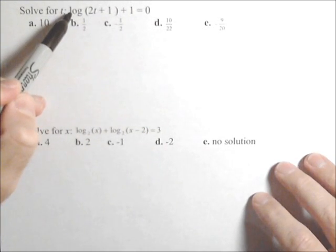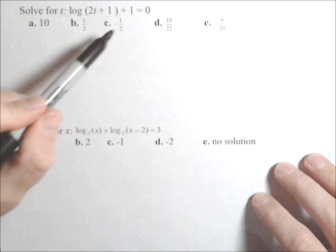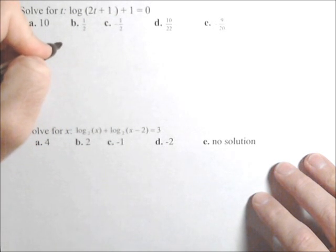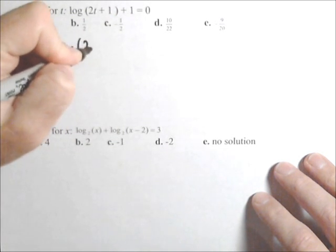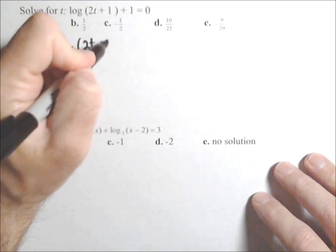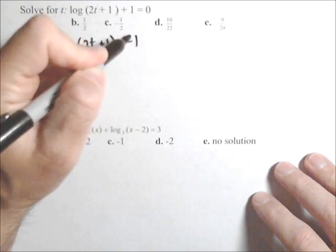So in the first one, best move is to subtract that one across first. So what we'll have is log of 2t plus one equals negative one.